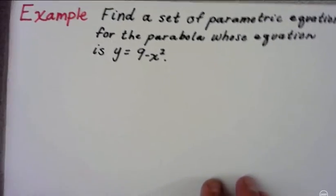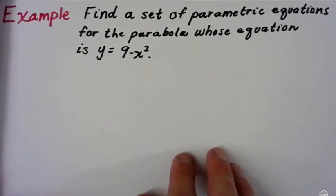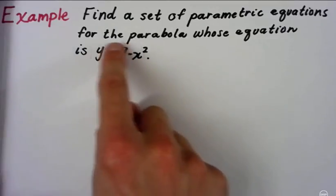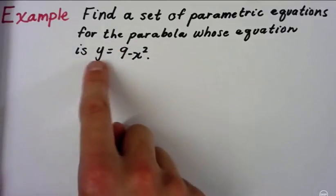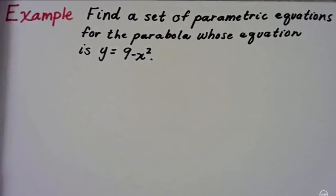So let's look at an example. It says find a set of parametric equations for the parabola whose equation is y equals 9 minus x squared. This isn't actually very hard at all. It's pretty straightforward.